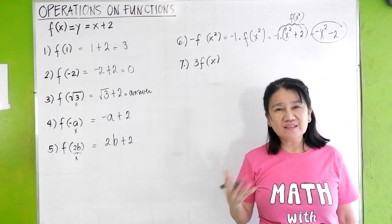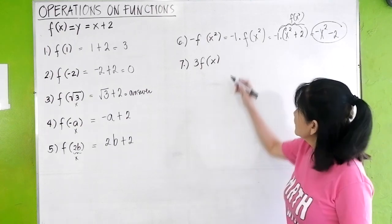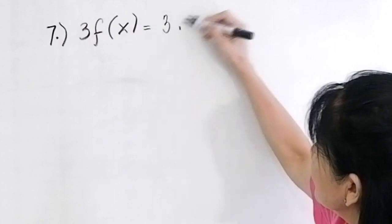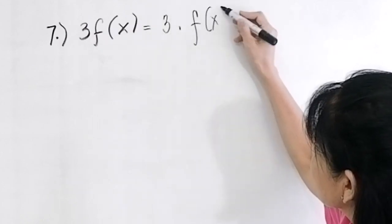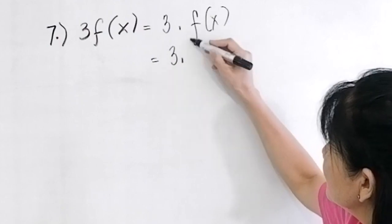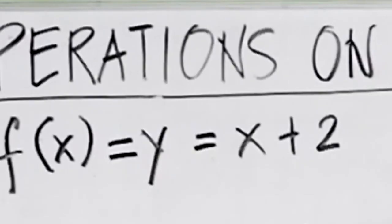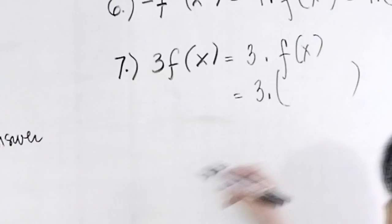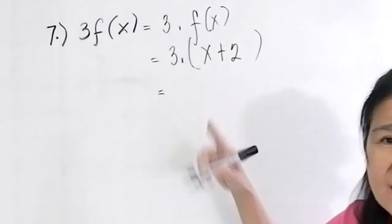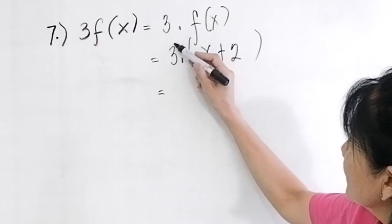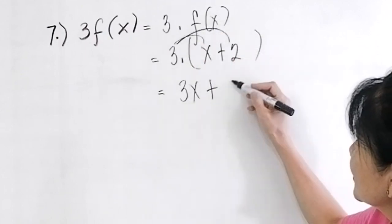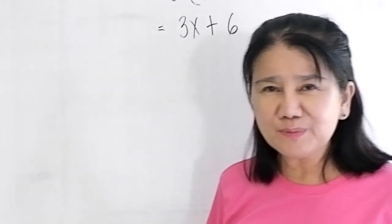Number 7: what is 3f(x)? This means you are multiplying 3 times f(x). So 3 times (x + 2) gives you 3x plus 6.